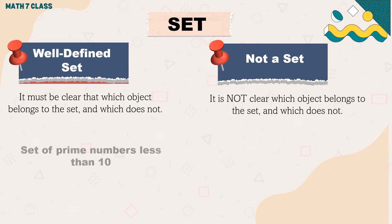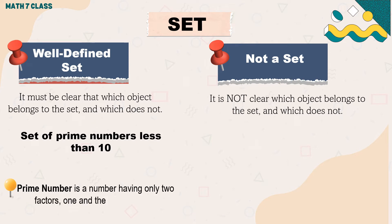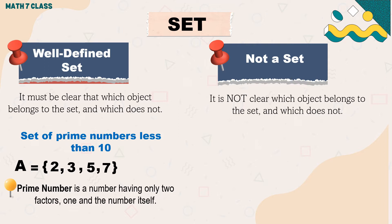If it is not clear which object belongs to the set and which does not, then this is not a set. An example of a well-defined set: a set of prime numbers less than 10. A prime number is a number having only two factors — one and the number itself. So the set of prime numbers less than 10 are 2, 3, 5, and 7.